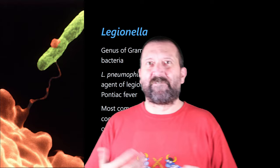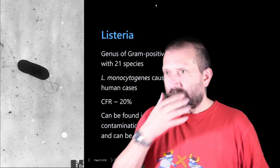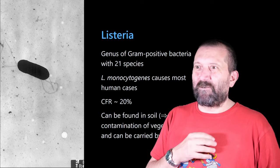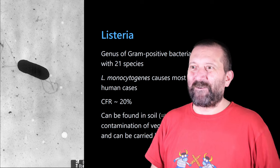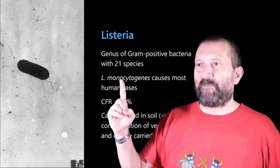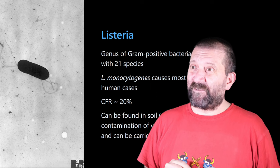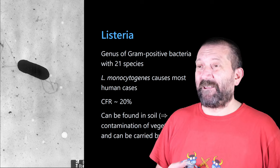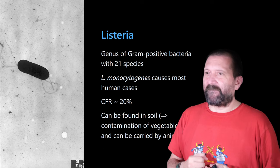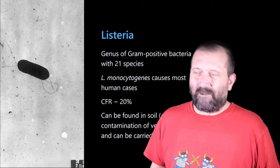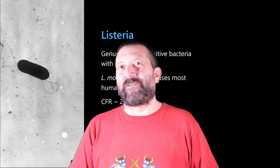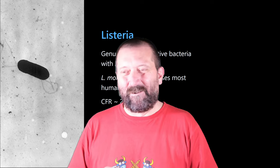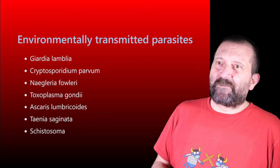The last type of bacterium I look at is Listeria, and this is the only gram-positive one here. It has 21 species and most human cases are generated by one particular species. The case fatality ratio is near 20%, making it a very serious infection. It's found mostly in soil, which means it can contaminate vegetables, and it can also be carried by animals. As with many of these diseases, there are several pathways to becoming infected.